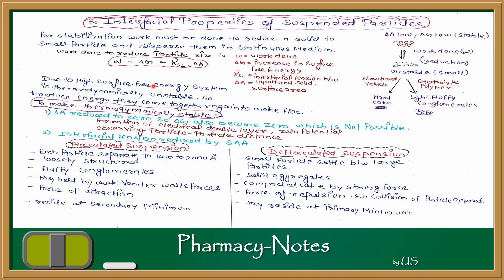To prevent instability, particles can reduce the energy and come together again to make a floc. To stabilize the particles, we will arrange them in the form of flocs so that the thermal energy of the small particles becomes stable again.